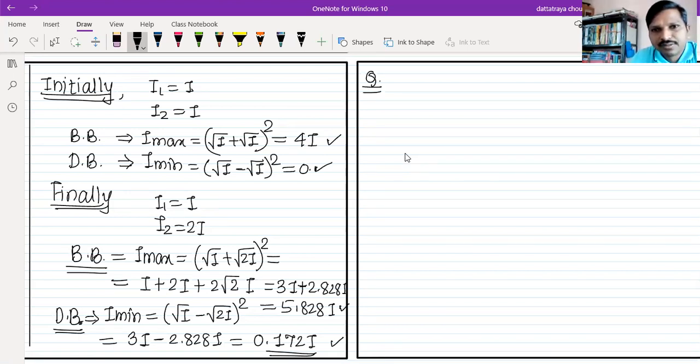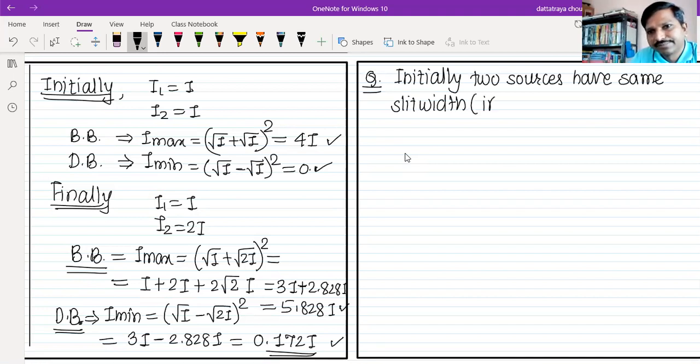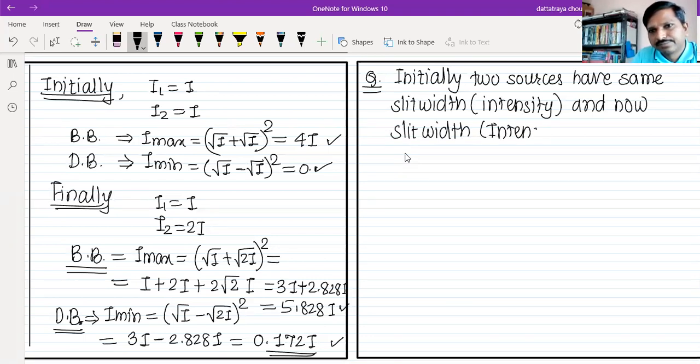Now, I want to answer the question. Initially, two sources have same slit width and intensity. And now slit width, intensity of one source is made half. Then, first option: intensity of both BB and DB increases.